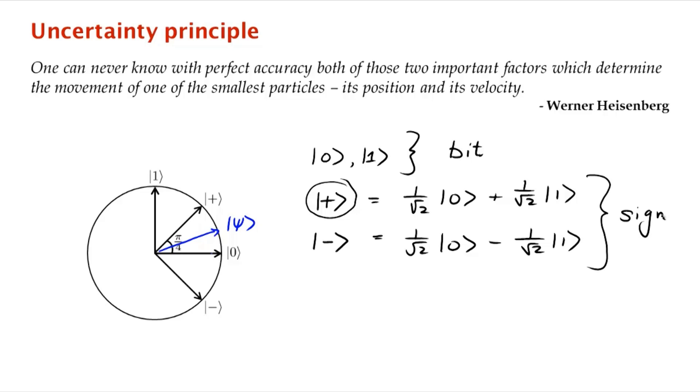But we can also be interested in figuring out a different quantity related to this qubit. We could measure it in the plus minus basis, and let's call that the sign value of the qubit. So if we were to measure this qubit psi in the plus minus basis, the outcome would be either plus or minus, and we'd have figured out the sign value of this qubit.